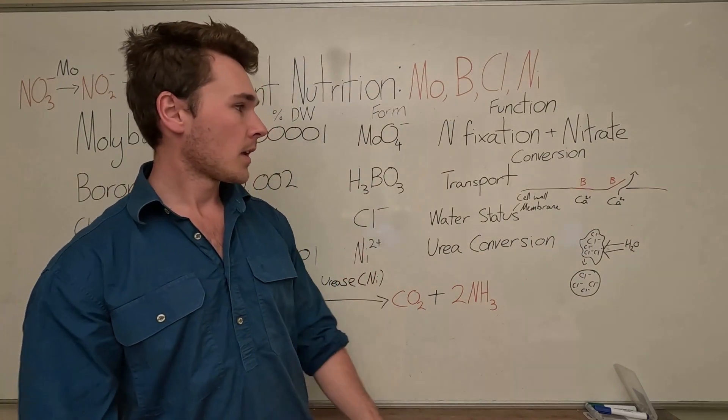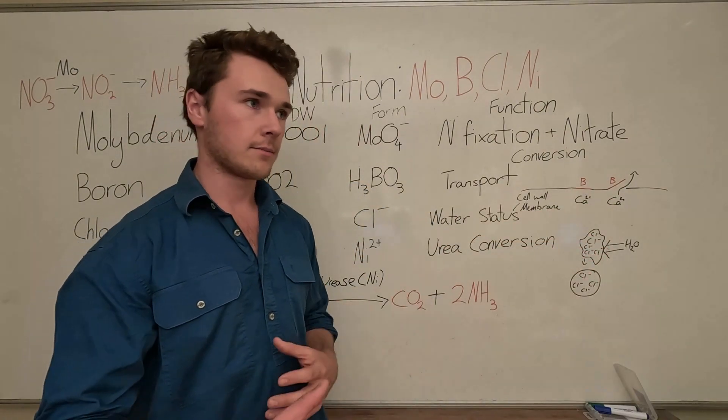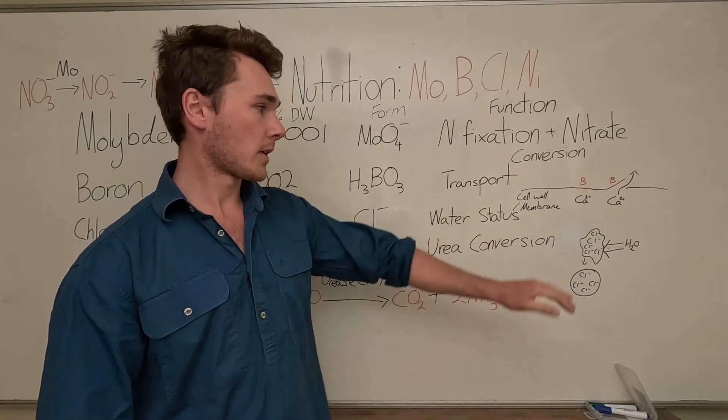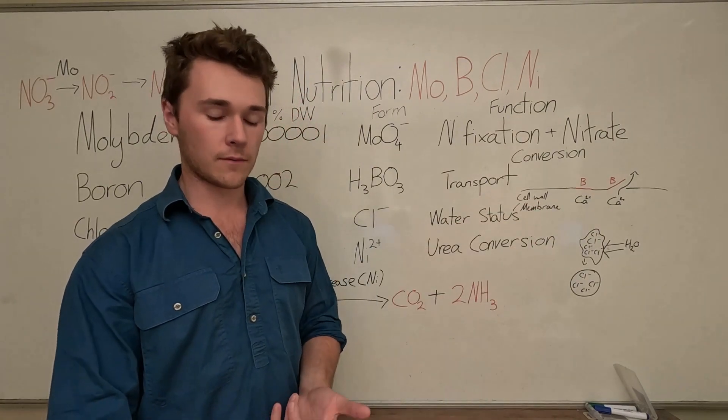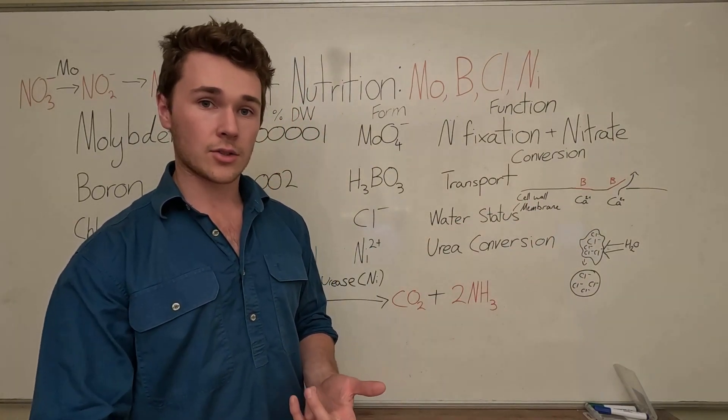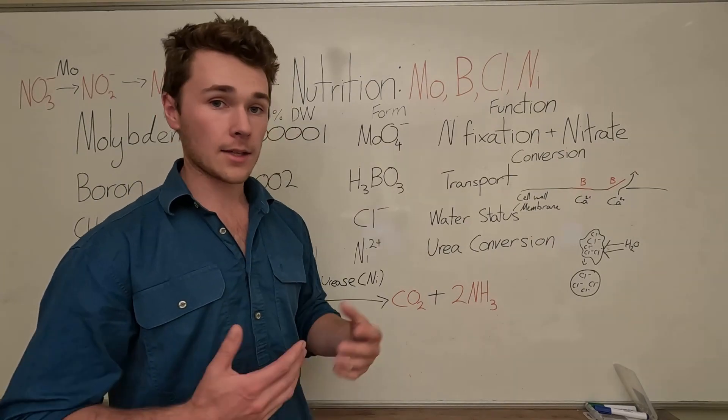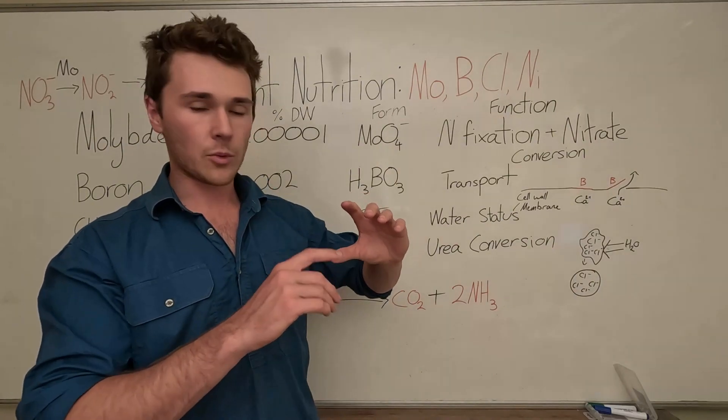When we have sufficient amount of boron, we have a sufficient amount of trap doors that allow things to go through. Calcium, for example—boron and calcium are very linked to each other. If we have low amounts of boron, we won't get a very high uptake of calcium. Boron is also very important for making sure our sugars are transported around the cell and the rest of the plant.